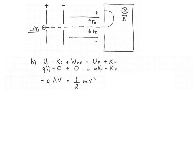You might be worried about the negative sign in front of the left side, since mass and speed squared are positive. This means that if ΔV is positive, q must be negative — which makes sense if you want to accelerate a negative charge from a negative region to a positive one. Alternatively, if q is positive, then ΔV must be negative. Looking at our picture, the initial plate is positive and the final plate is negative, so V_final is lower than V_initial. Therefore negative q times ΔV is a positive number, and both sides of the equation are positive. Solving for ΔV gives: ΔV = −mv² / (2q).